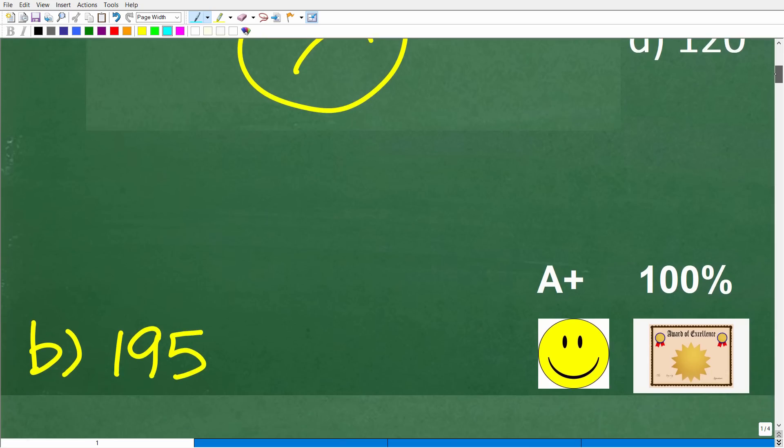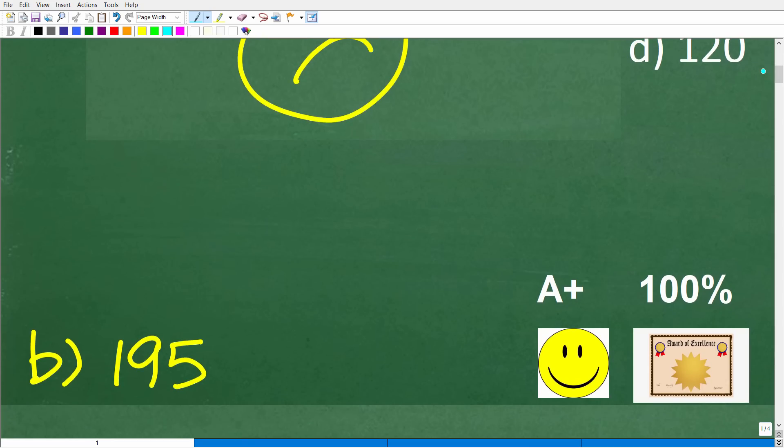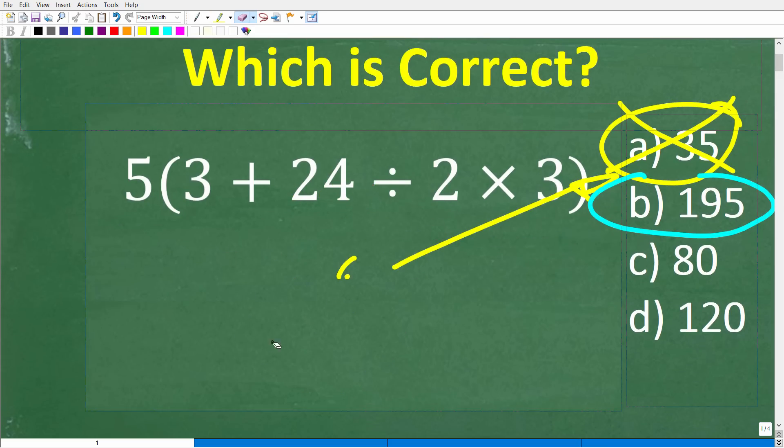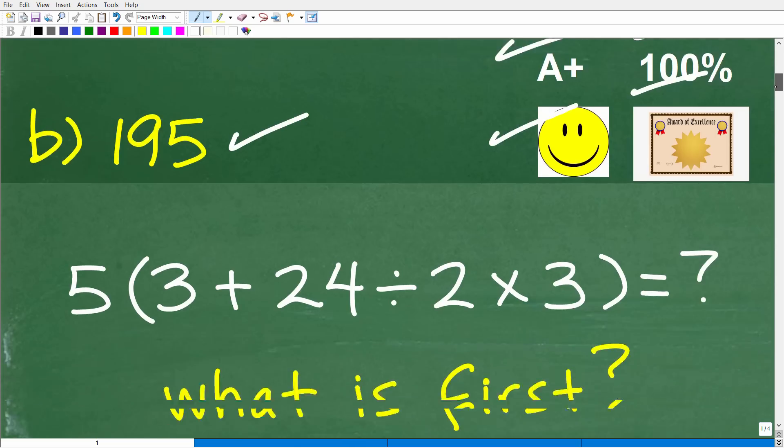So congratulations if you got this right. But if you got this wrong, I'm happy you made this error, because I want to review something that's very important in basic mathematics, which is probably the primary reason that most of you got this wrong, and that is the order of operations. But for those of you that did get the right answer, 195, well, you definitely get a happy face, an A+, a 100%, and a Certificate of Excellence for your knowledge of the order of operations.